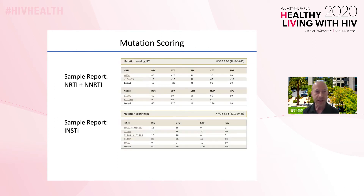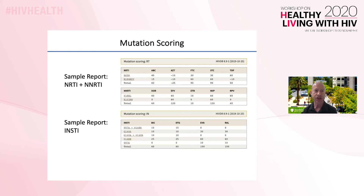For each drug class, the output contains a table showing the mutation scoring that led to the interpretation. For each drug, these tables list mutation penalties that, when added together, are converted into a level of reduced susceptibility. Mutation penalties can be assigned to individual mutations, as shown for the NRTI DRMs in this example, or to individual and combinations of mutations, as shown for the INSTI DRMs. Combination scores are particularly important for ARVs with a high genetic barrier to resistance, such as the second-generation INSTIs.